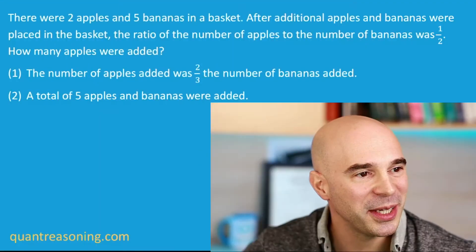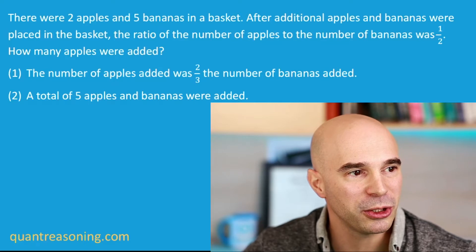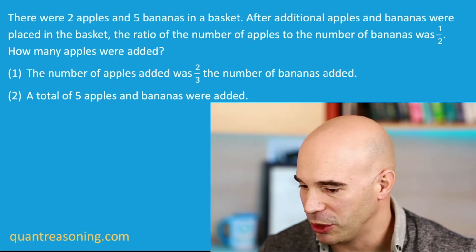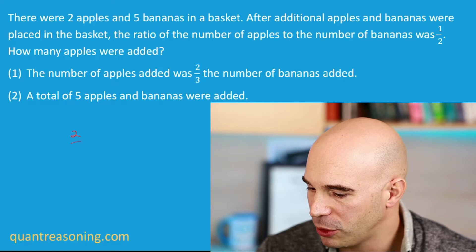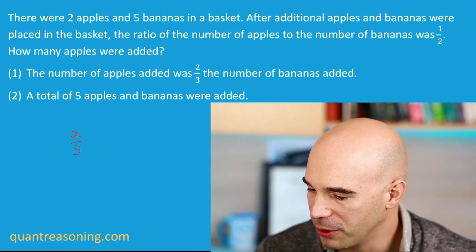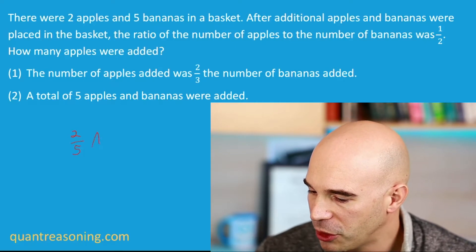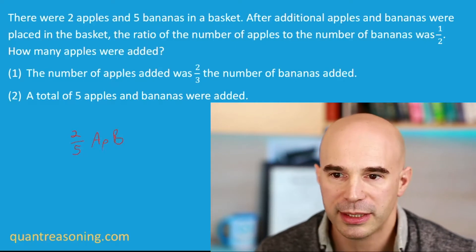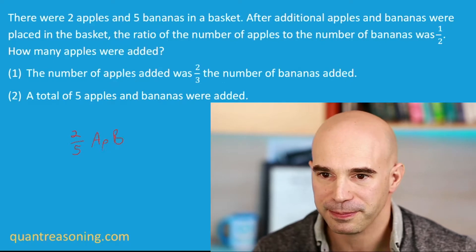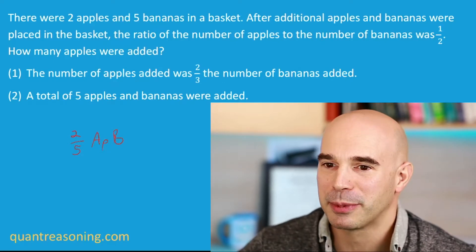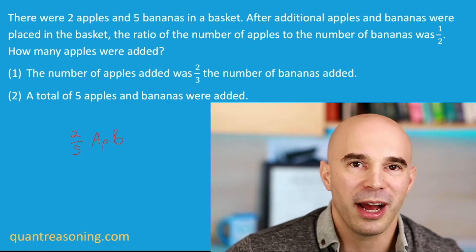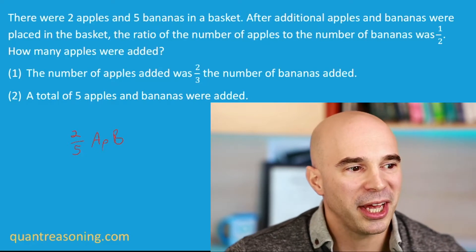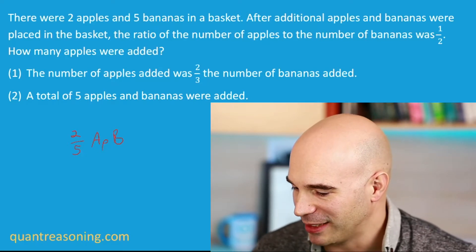So why do I say that this question is a mixture of two ratios? Well, we're starting out with a ratio of two-fifths, and I'm going to call the ratio APB — apples per banana, just like we have miles per hour or miles per gallon. This is apples per banana.